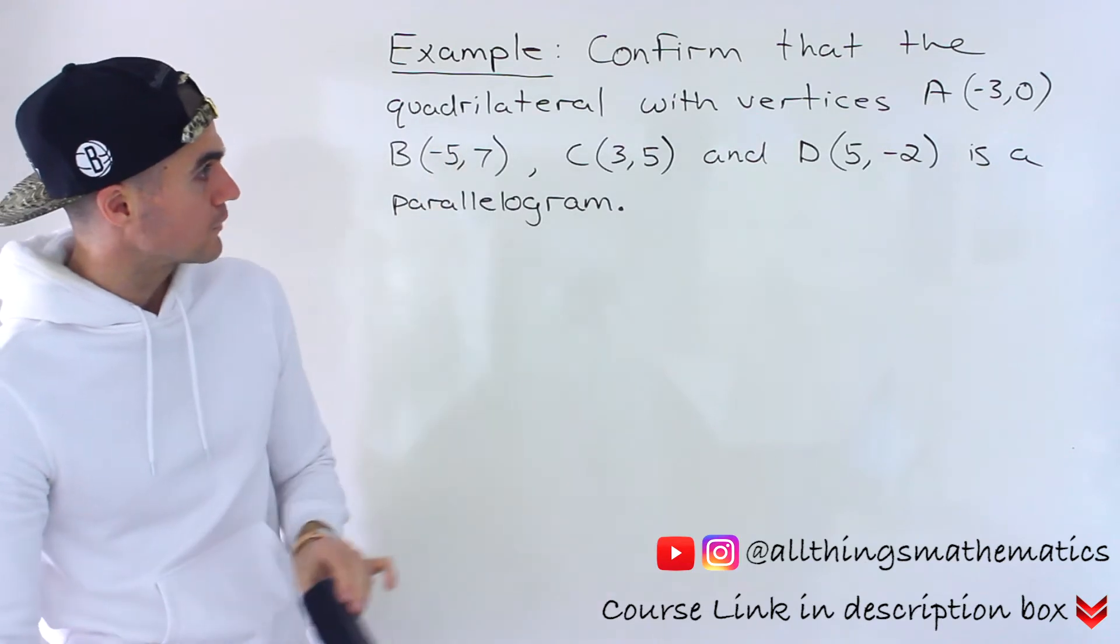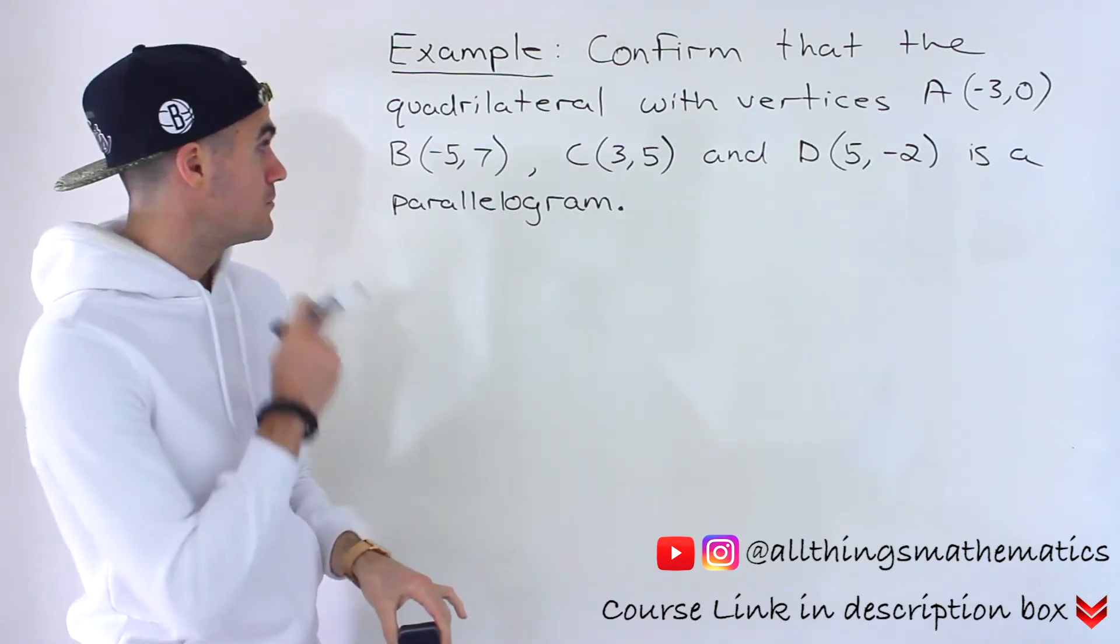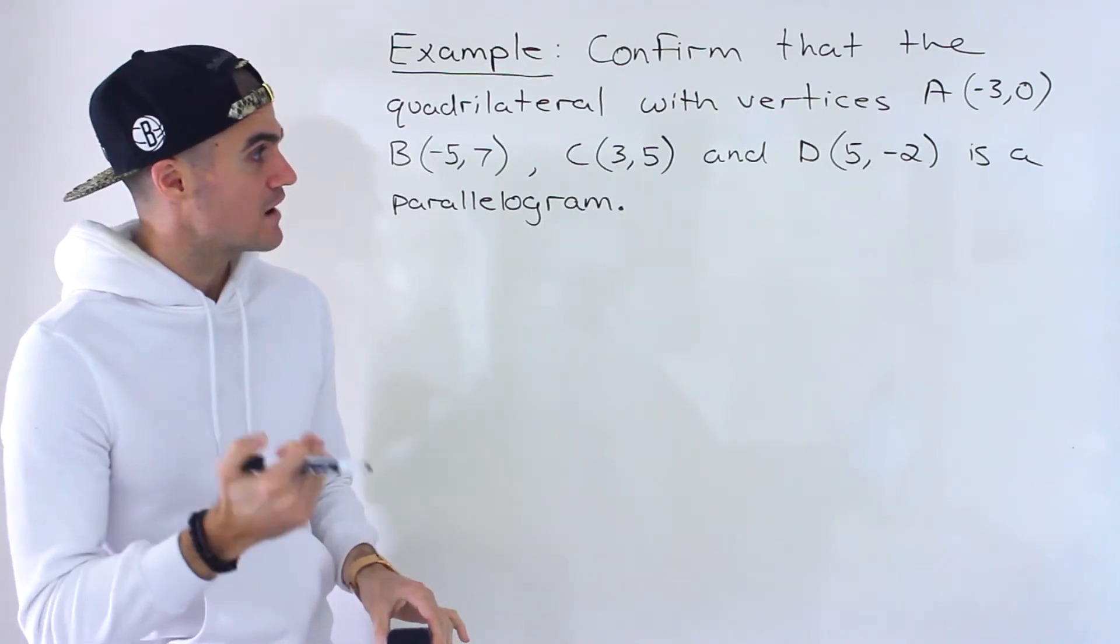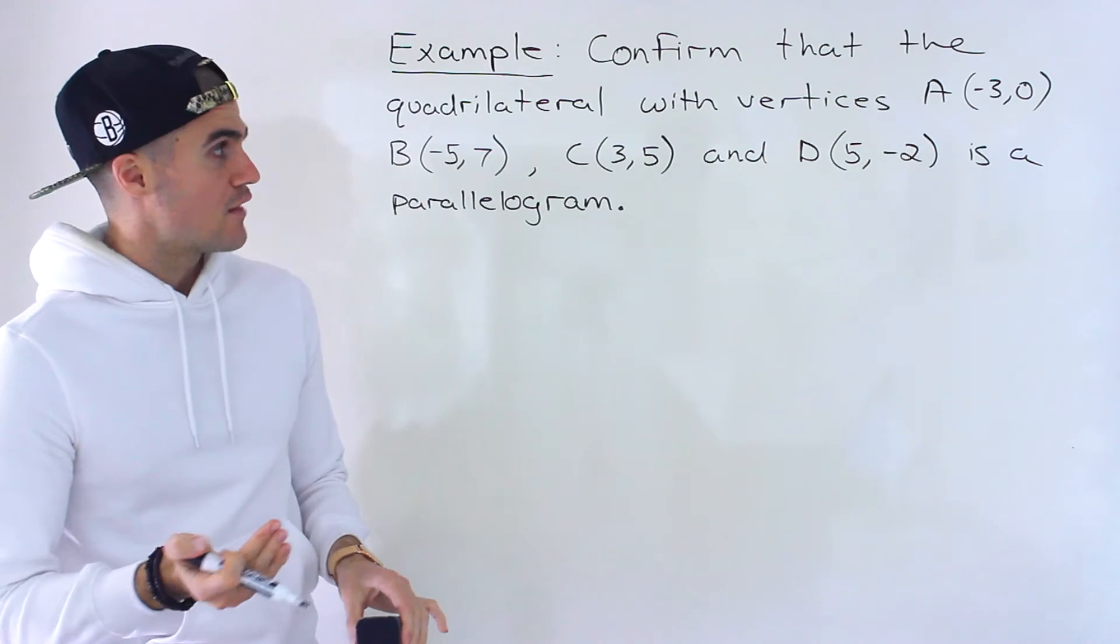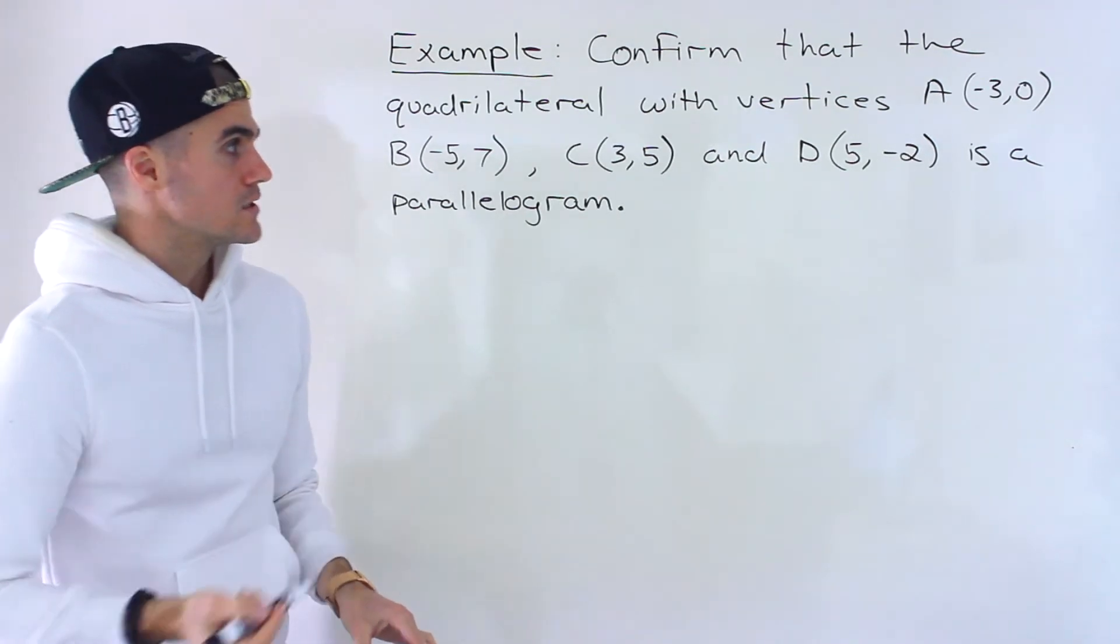We have to confirm that the quadrilateral that has these four vertices is a parallelogram. So A is at (-3,0), B is at (-5,7), C is at (3,5), and D is at (5,-2).